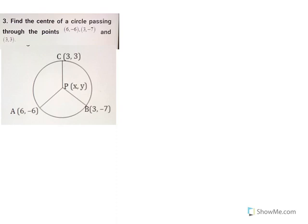We have three radii here. One is PA, another is PB, and the third one is PC. We know all three are equal because they are the radii of the same circle.